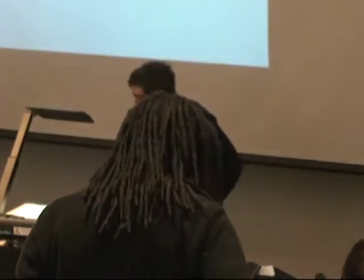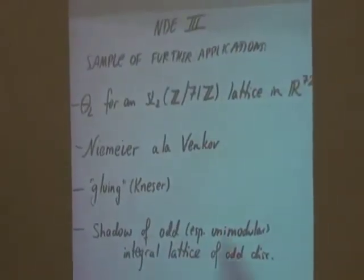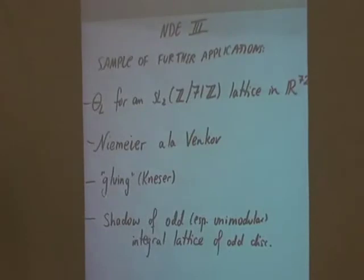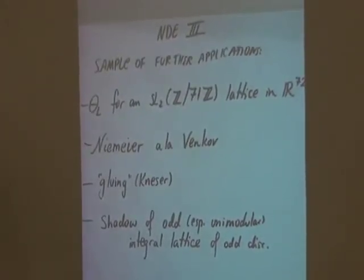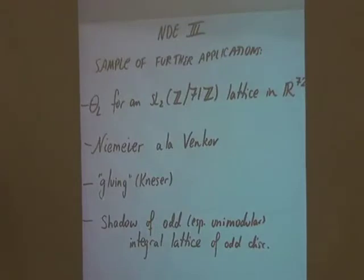At any rate, the examples are: actually computing a theta function for an interesting lattice, for Niemeyer's classification of even unimodular lattices of rank 24 as simplified by Venkov using weighted theta functions; what's sometimes called the gluing technique, apparently promoted by Kneser, that allows you to reduce questions about lattices of discriminants other than one to techniques developed for rank-one lattices; and finally, this neat matter of a shadow — which among other things illustrates the appearance of intriguing conditions modulo 8.